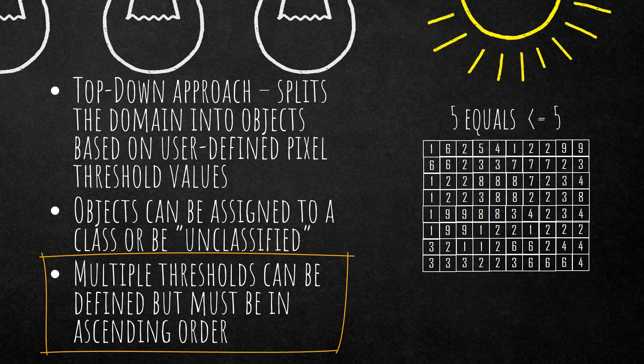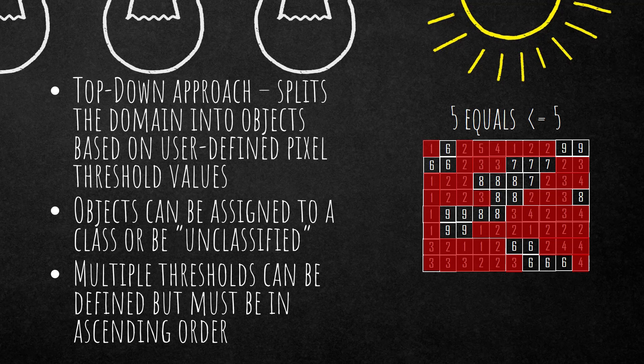If you define multiple thresholds, they have to be in ascending order. For example, if we set one threshold to five, all values lower than five will be put into one image object and one class, and all values higher than five into another class. In this case, all values equal to five and smaller are put into the red class and the others into an unclassified class.